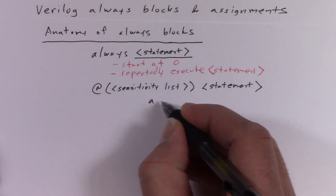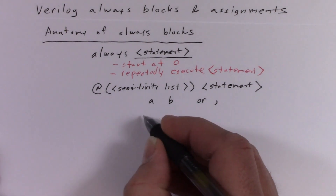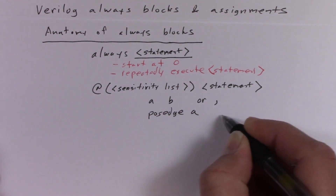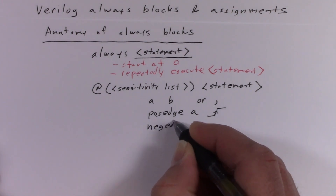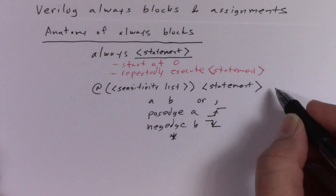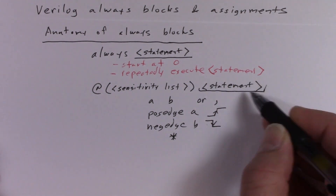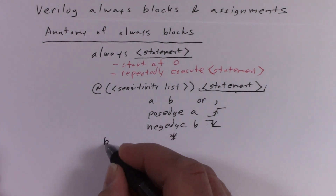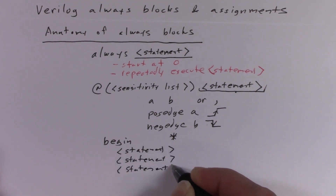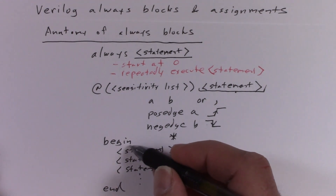Within the sensitivity list, you can have signals like A and B, separated with 'or', or in Verilog 2001 you can also use a comma. You can specify a specific edge — like a positive going edge (rising edge) or a negative edge (falling edge) — or you can say star, which means any input to the statement is automatically put in the sensitivity list. Very often, though not required, this statement will be a sequential block, indicated with begin and end. The sequential block executes all of its statements in order.